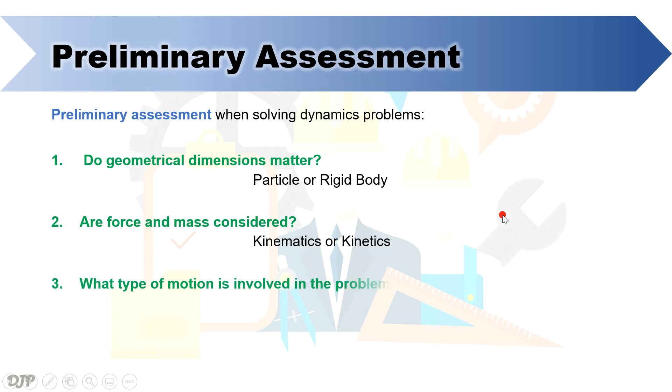Lastly, what type of motion is involved in the problem? This question has only three possible answers. By just imagining the motion as described by the problem, you will surely identify the type of motion that is involved. It can be translation or rotation or a combination of translation and rotation.